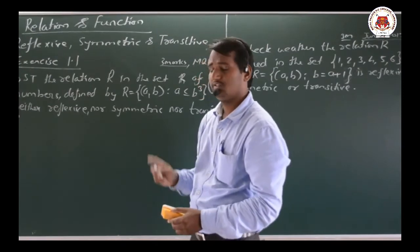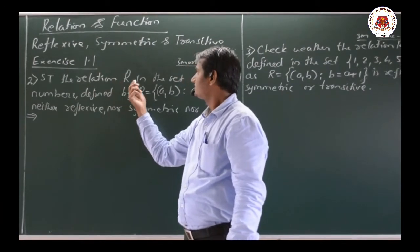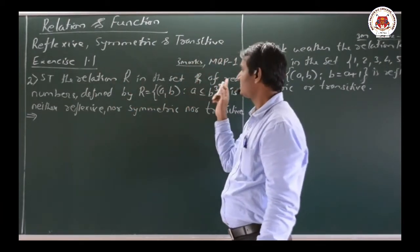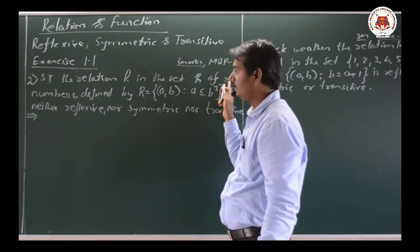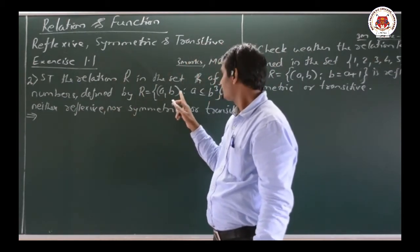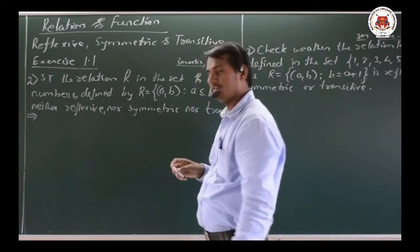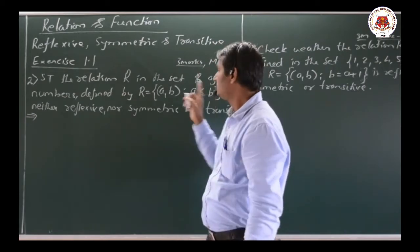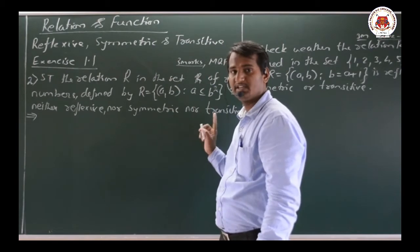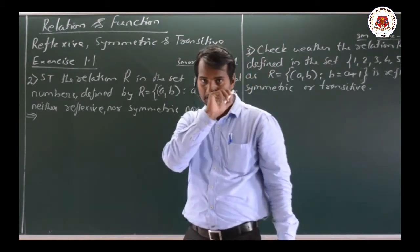Let us start with the first example. The relation R in the set of all real numbers is defined by R = {(A, B) such that A ≤ B²}. We need to show that this relation is neither reflexive, nor symmetric, nor transitive.